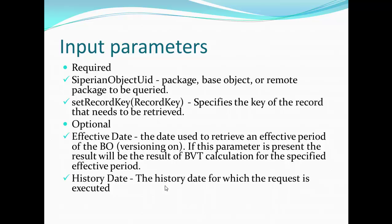Required parameters are: first, the object UID — that is nothing but the package name, or the base object name, or the remote package name. The second required parameter is the record key — we have to set the record key to specify the key of the record that needs to be retrieved.